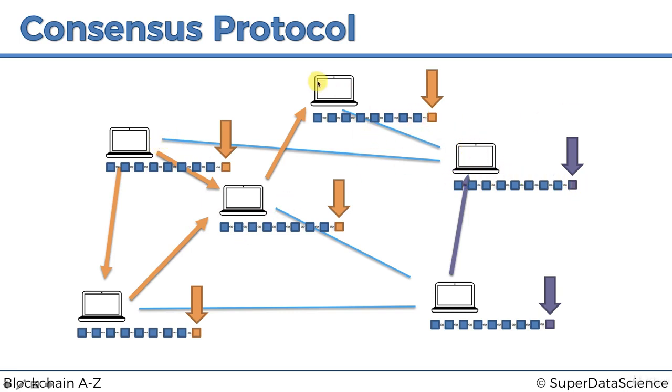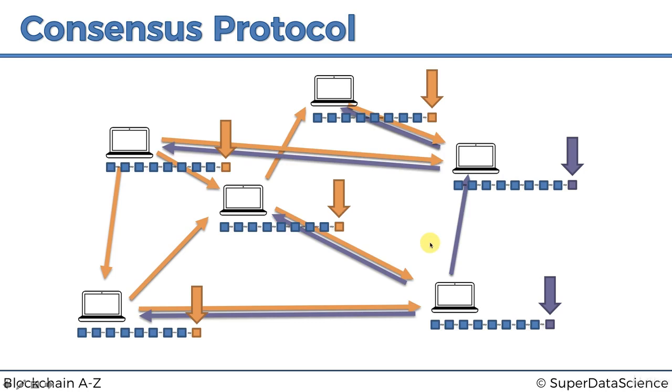So now what happens is this node and these nodes are trying to tell this node 'add this orange block,' but this node is saying 'add the purple block.' Now you see orange block, and he's saying 'no, add the purple block.'